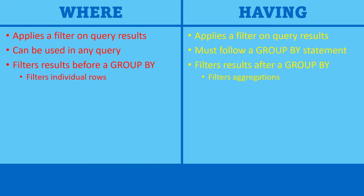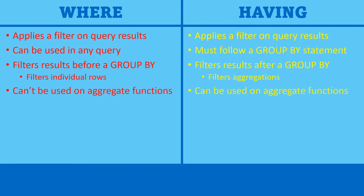Another way of saying this is that the WHERE clause filters individual rows, while the HAVING clause filters aggregations. The WHERE clause cannot be used on aggregate functions, while the HAVING clause can.